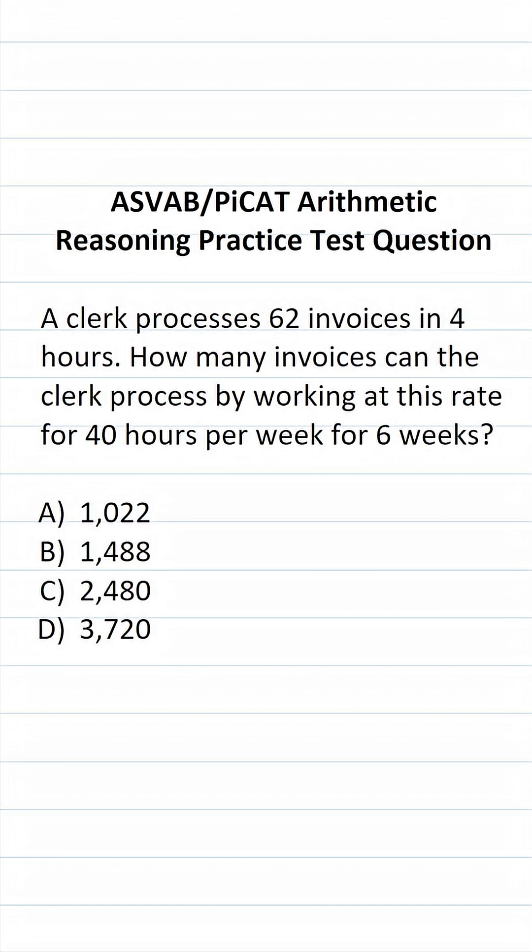Alright, so we're going to solve this one using a proportion. Again, a proportion is nothing more than two fractions that are set equal to each other. Let's fill in the left-hand side of the proportion with the information we know. We know the clerk can process 62 invoices in 4 hours. And let's take a look at how I set up that left-hand side. We have the number of invoices over time in terms of hours.